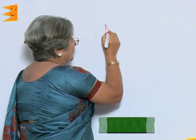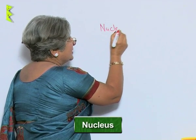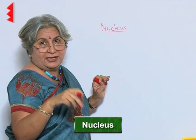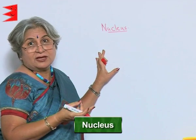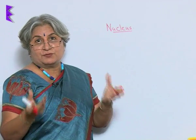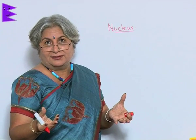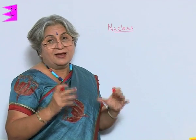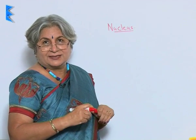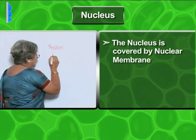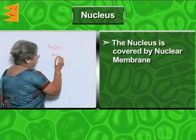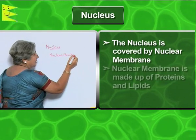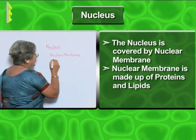What we are going to study now is the Nucleus. Just like a cell has a security ring, the nucleus also has one — because the palace is even more valuable. All the important things, important documents, the treasure, everything is inside the palace. So the nucleus is also covered by a nuclear membrane, which is made up of proteins and lipids.